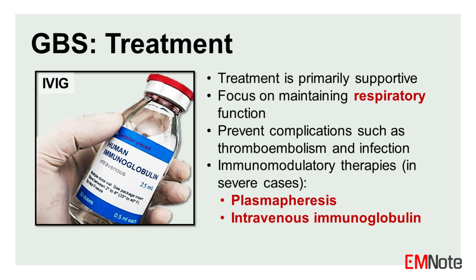Treatment of Guillain-Barré syndrome is primarily supportive, with a focus on maintaining respiratory function and preventing complications such as thromboembolism and infection. Immunomodulatory therapies, including plasma exchange and intravenous immunoglobulin, can hasten recovery and are often used in severe cases.